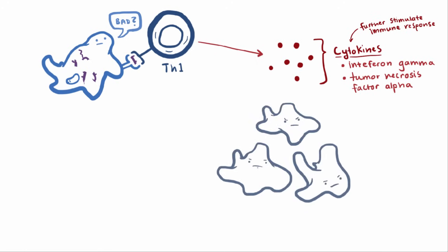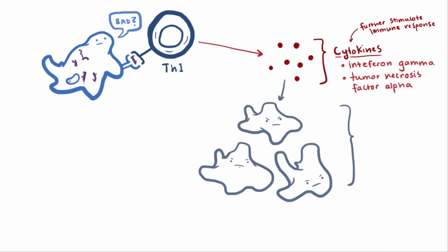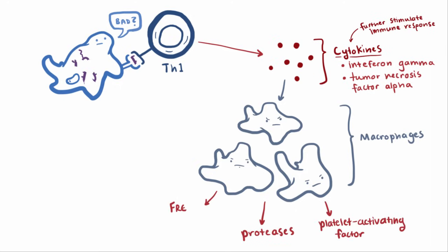The cytokines attract inflammatory cells like macrophages, which start releasing even more inflammatory substances like proteases, platelet-activating factor, and free radicals, all of which contribute to inflammation.